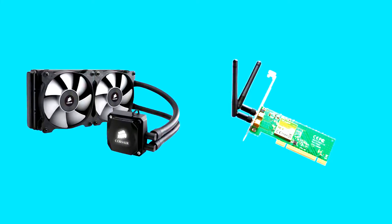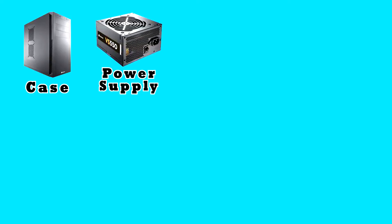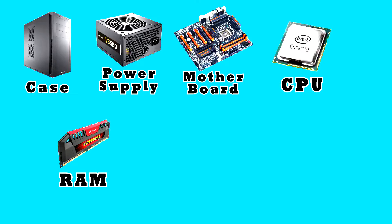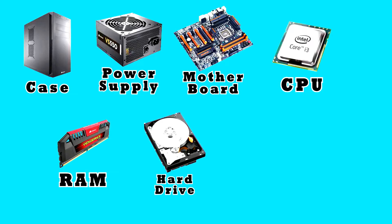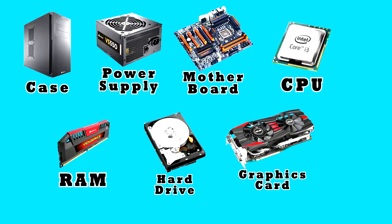So that pretty much sums it up. There are other components worth mentioning, such as cooling systems or internal wireless cards, but those are extras. To summarize: the case stores everything in a physical box, the power supply gives electricity to what needs it, the motherboard is the body that everything plugs into, the CPU does the processing, RAM stores data needed for quick access, hard drives store everything you have installed and the data that goes with those programs, and the graphics card figures out how it all looks on your monitor.